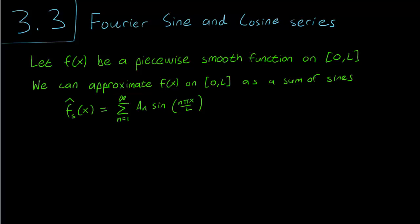So let f(x) be a piecewise smooth function on [0,L]. Remember that in the previous setting we used -L to L instead, so this is just half of the interval that we used last time, the right half.